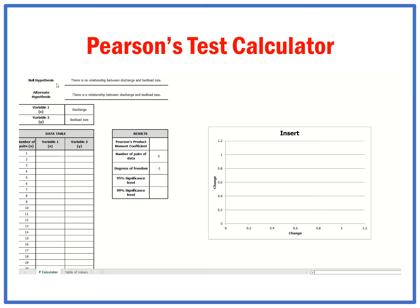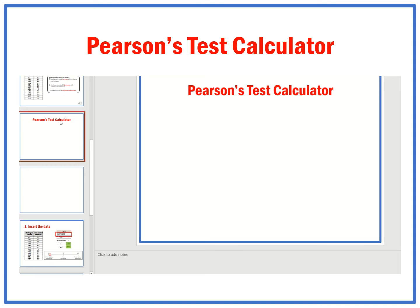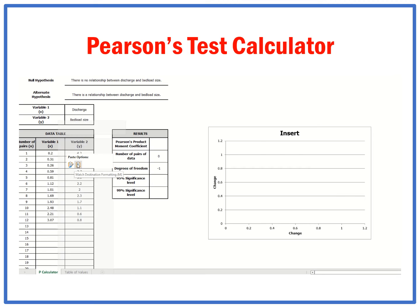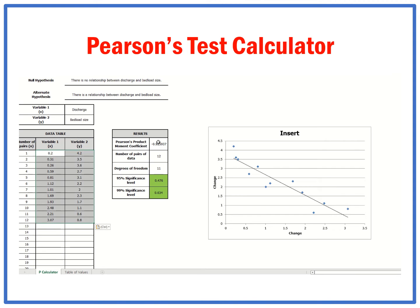In my calculator I've put in the null hypothesis, the alternative hypothesis, and I've got my variables. Now I'm going to copy and paste in the data that I have collected. I go back up to my data, copy and paste. It's put the graph in for me, so I'll change the y and x-axis and put in a title. It shows number of pairs: 12, degrees of freedom: 11, and it's given me a result of minus 9.25, with both boxes turned green.